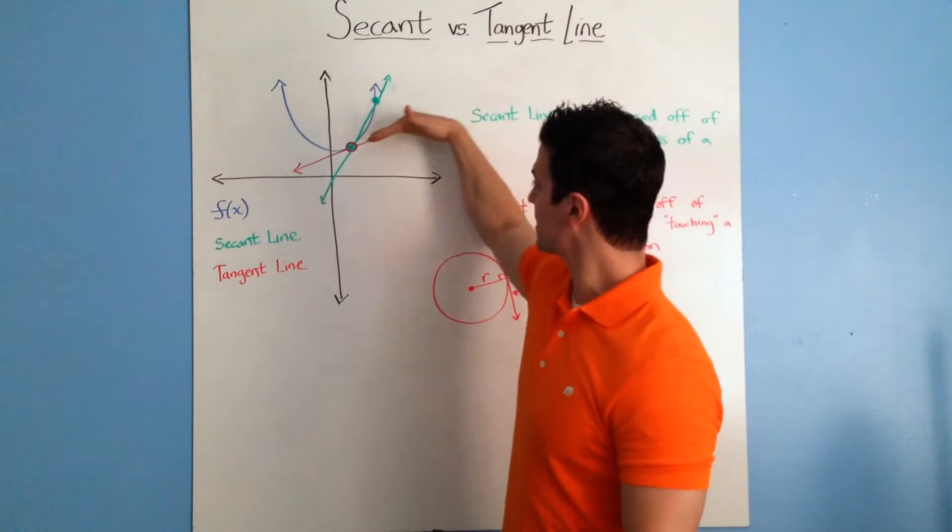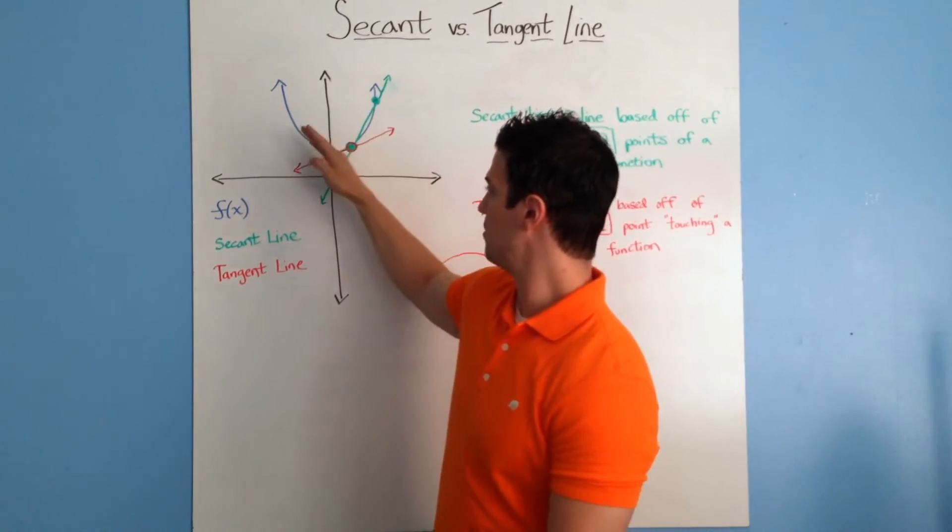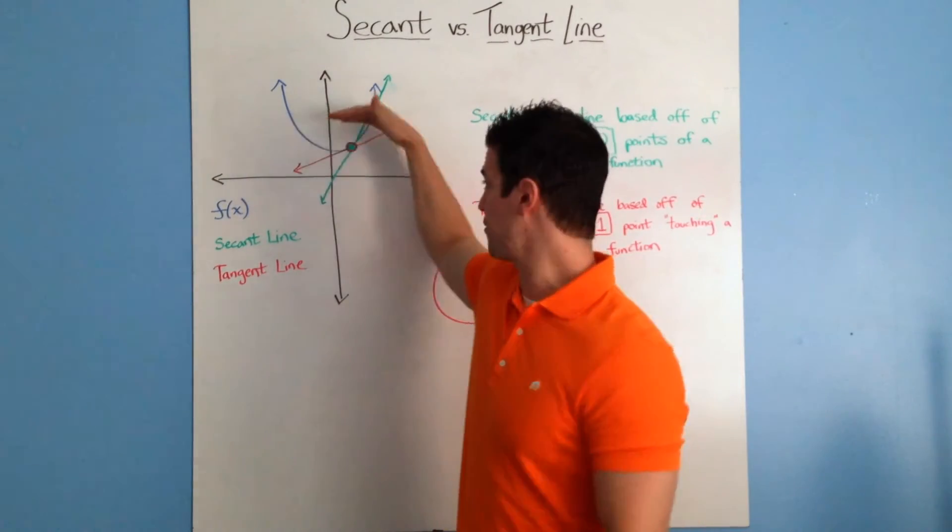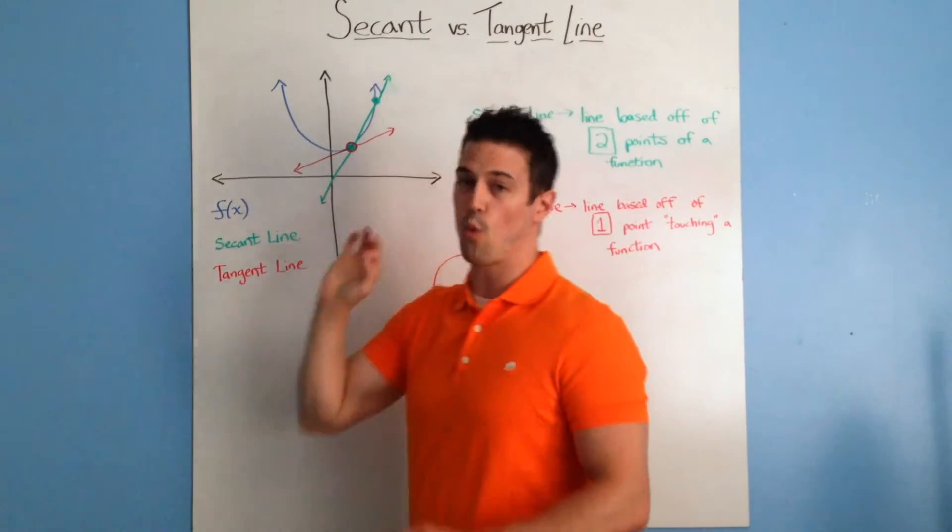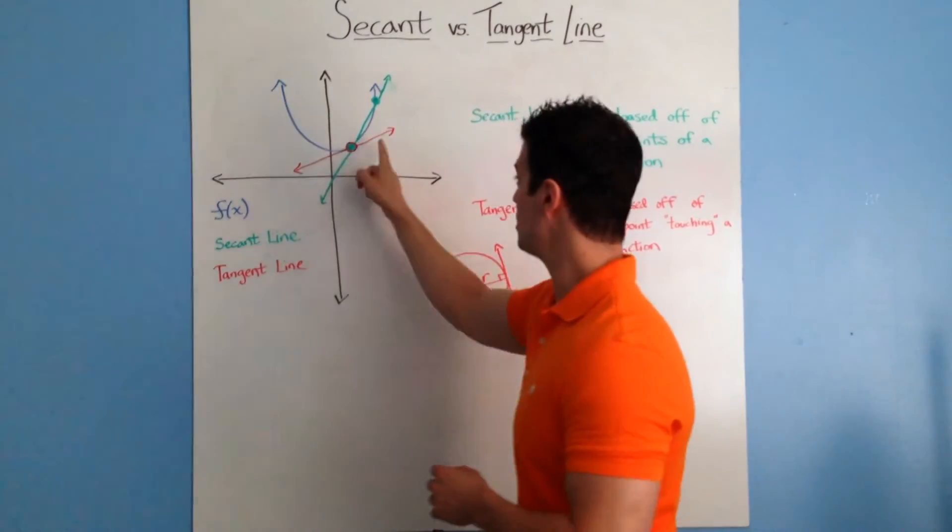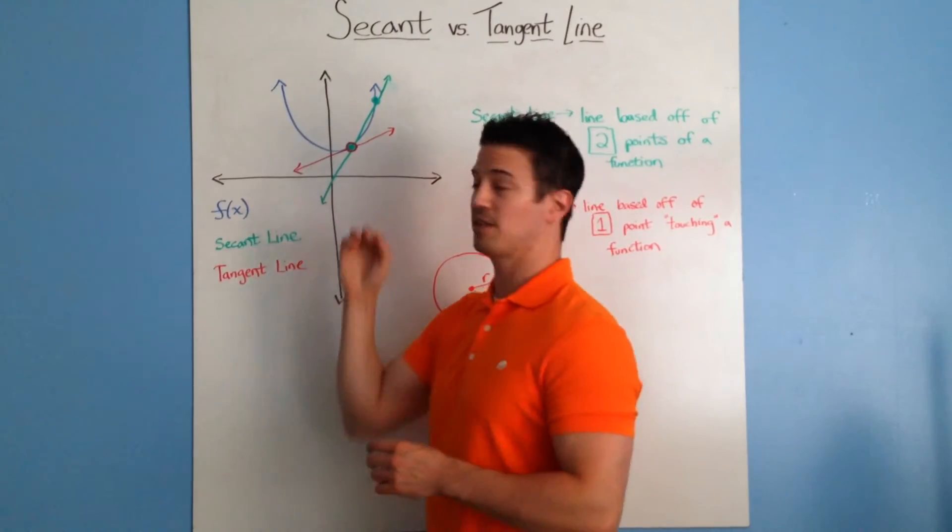It could technically be intersecting other parts of the function - say this was a function x³, it could be coming back down and crossing it. But really, the line is based off that one point. It's only touching that one point and none of the points surrounding it.